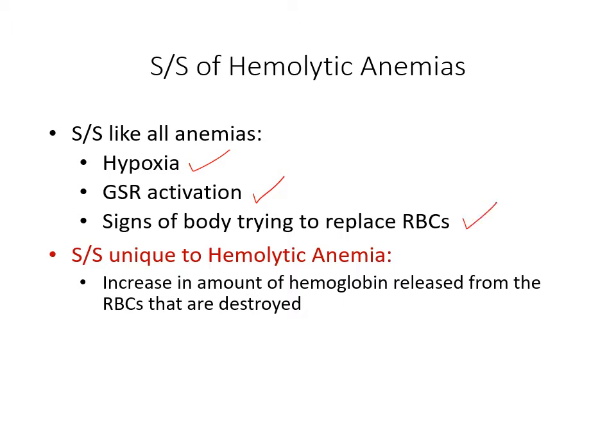These include an increase in reticulocytes — those immature red blood cells. You may also get an increase in red blood cell production in your bone marrow, which may lead to bone pain and an increased risk of fracture because the insides of your bones are thinning out to accommodate that increase in red blood cells.